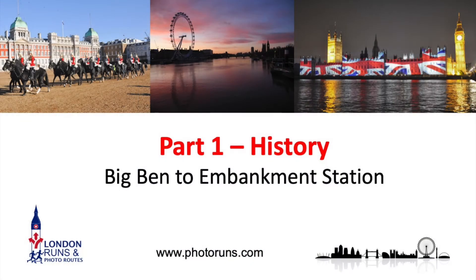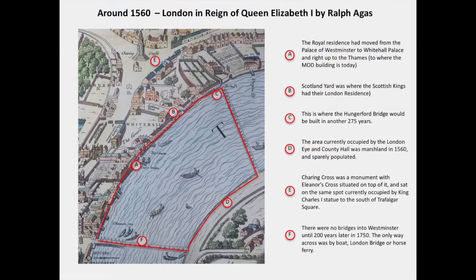Let's start the first part of the route. There are six parts in all, and this is the first part going from Big Ben to Embankment Station. Here is a map from 1560, and you can see that Whitehall Palace is mainly in this particular section.